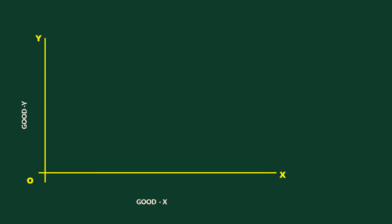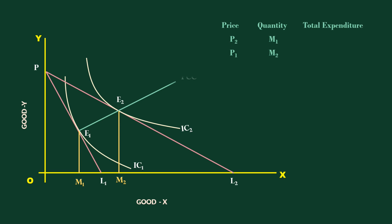See this graph. The price line PL1 represents P2 price of good X. The consumer buys M1 quantity of good X. After a fall in price to P1, the price line becomes PL2. The consumer buys M2 units of good X. After a fall in price, the consumer buys more.